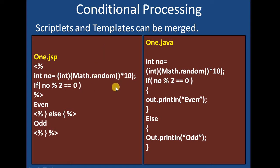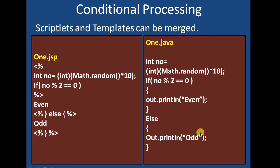The JSP page is finally converted into servlet code — a Java servlet file. In the converted code, int number is declared, and inside the if/else brackets we see out.println calls where the HTML template has been merged directly. In the else case, another out.println merges the template. This is how conditional processing is performed in JSP — by merging JSP code and templates together.